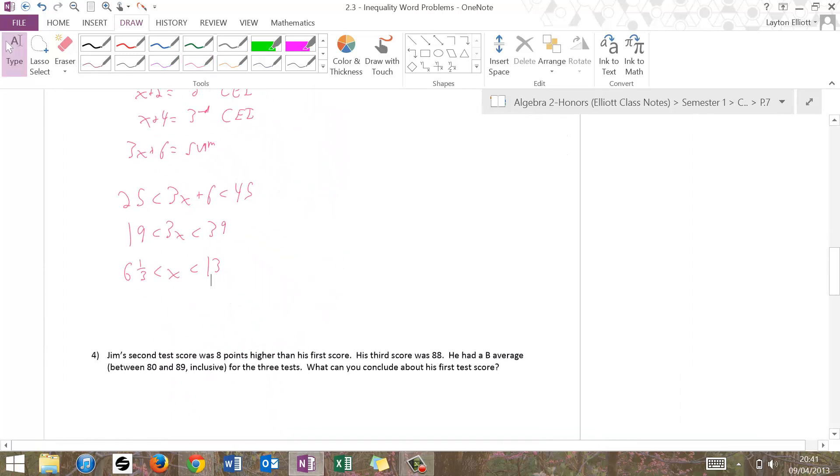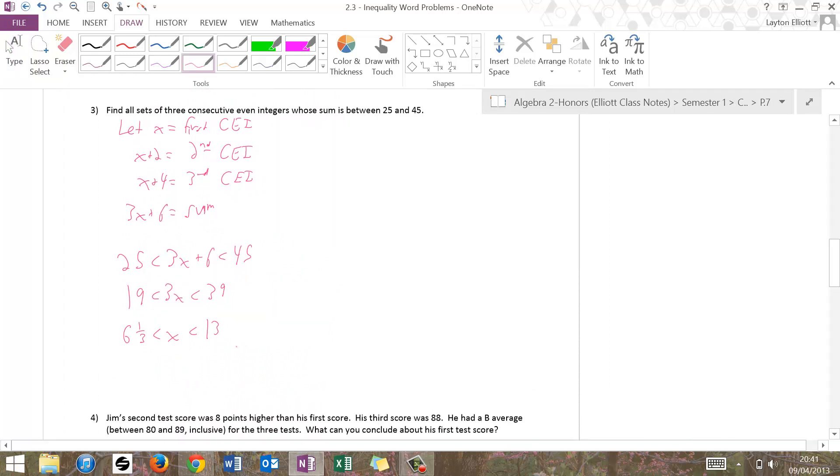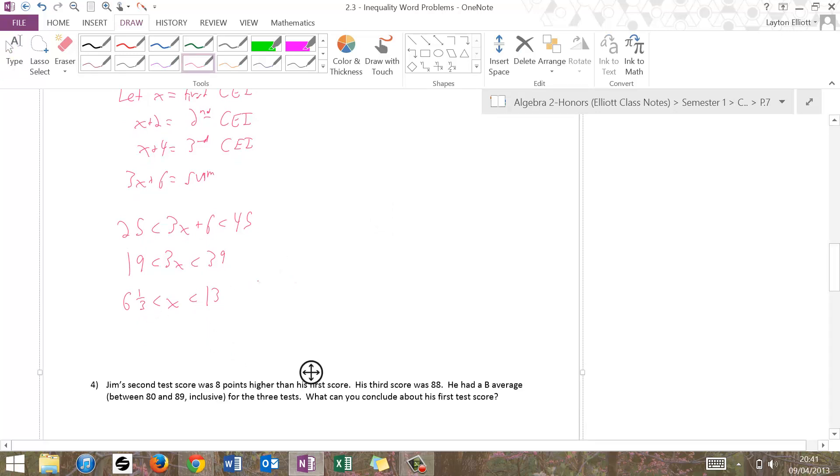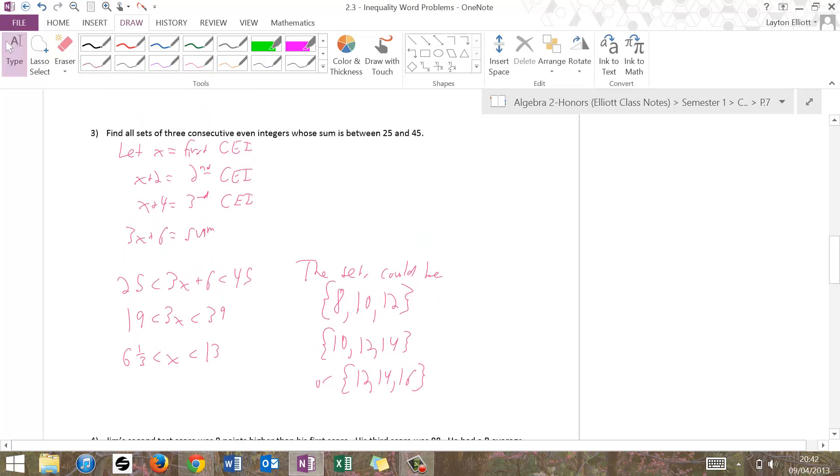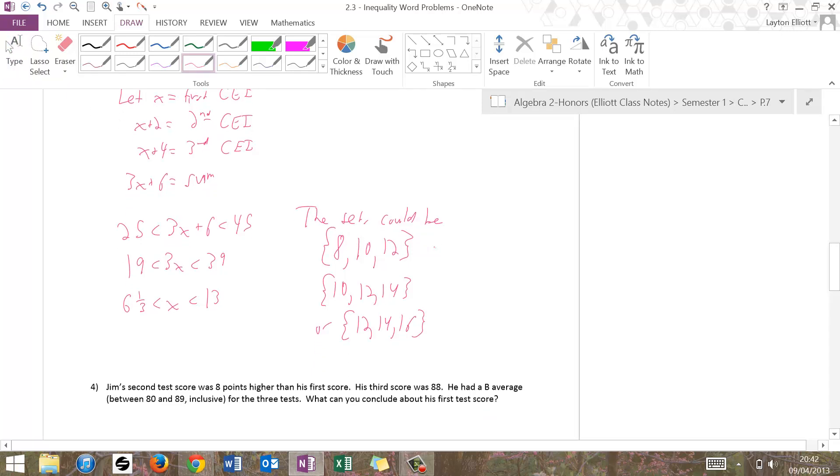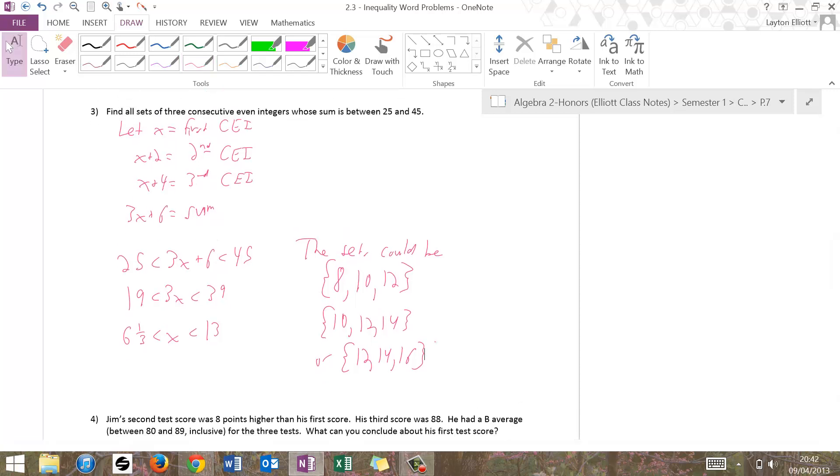So all sets of consecutive even integers whose sum is between 25 and 45, the consecutive even integers must be between these two, all of them. Actually my x's must be, so what I have to do is figure out, okay, so x could be, not 6, it could be 7, it's not even. Let me just say the sets could be: first one would be 8, so it could be 8 and 10, then 12. Let's go 10, 12, 14, or 12, 14, 16. Let's check that last one just to make sure it has a sum between 25 and 45. If I add them all up really quick in my head, I get 42. So that works. And then the bottom one, if I add them all up, I get 30. So that works. They all have a sum between 25 and 45. Check. Got that one done.